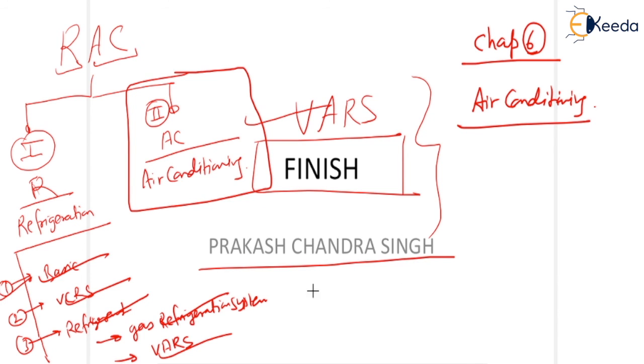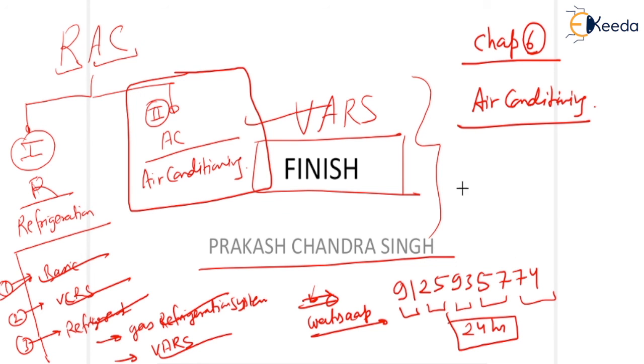My name is Prakash Chandra Singh. If you have any doubt you can contact us. This is my personal WhatsApp number 9125935774. So if you have any problems you can contact us with this WhatsApp number. Within 24 hours you can get the solution. And this is my personal mail ID: professorpc01@gmail.com.